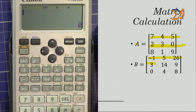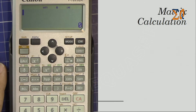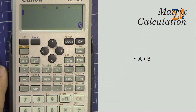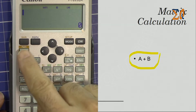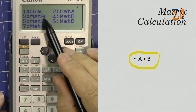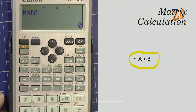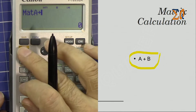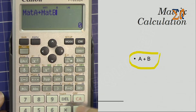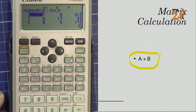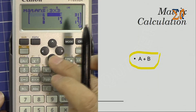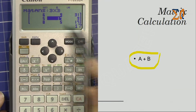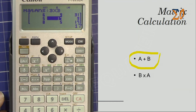To add matrix A and matrix B, press Apps to bring matrix A, press number three, then press the plus sign, then bring matrix B by pressing number four. Press equal to get the result of matrix A plus matrix B.